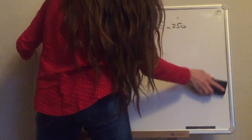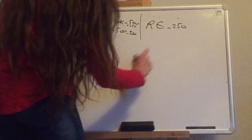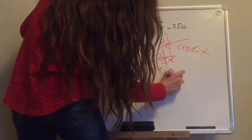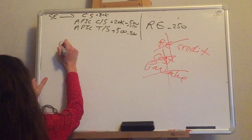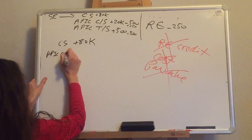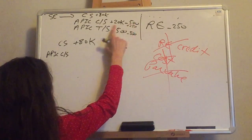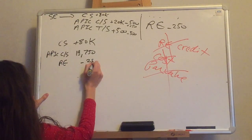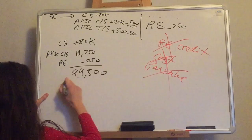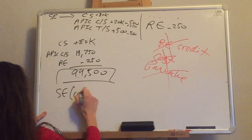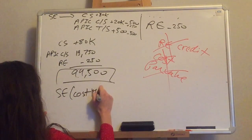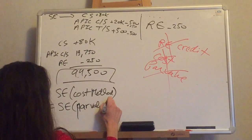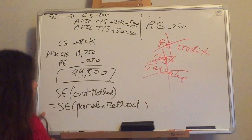Also, using the par value method, you can never have retained earnings on the credit side. Retained earnings on the credit side — never. Not while using the cost method and not while using the par value method — never. Common stock $80,000, APIC common stock net $19,750, APIC treasury stock zero, treasury stock zero, retained earnings minus $250 gives $99,500. That's the same total amount we got using the cost method. The total stockholders' equity does not change between the two methods.